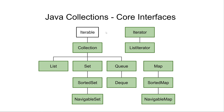The first interface I want to talk about is the Java Iterable interface. The Iterable interface represents a collection of objects which can be iterated — typically by obtaining an iterator from the Iterable and then iterating through the elements. You can also use the Java for-each loop with an Iterable. I've made this interface white in the diagram because it is not actually part of the Java Collections API, but the Collection interface in the Java Collections API extends the Iterable interface, so that all collections are Iterable.